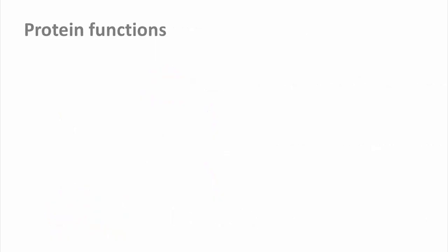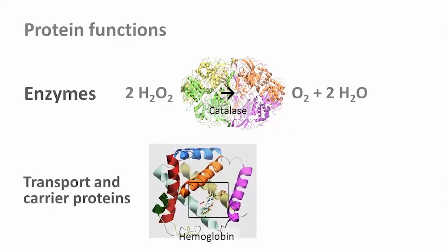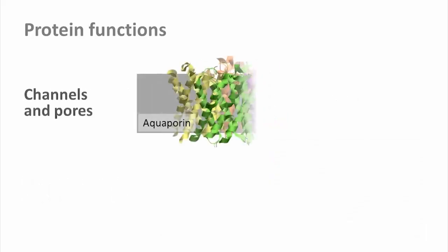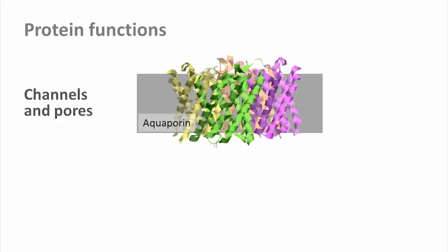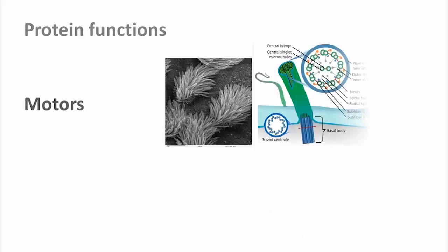A large group of proteins is responsible for doing the chemistry in the cell: the enzymes. Catalase, for example, breaks down hydrogen peroxide. Other proteins specialize in carrying specific molecules like lipids or oxygen, in the case of hemoglobin. Transport of molecules across membranes is enabled by protein channels, pumps and pores such as the aquaporins. The internal structure, shape and support of cells is organized by structural proteins including actin and tubulin of the cytoskeleton, or collagen in connective tissue. All active movement in the cell is done by motor proteins, mainly myosin, kinesin and dynein, as we see here in cilia.